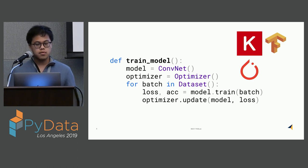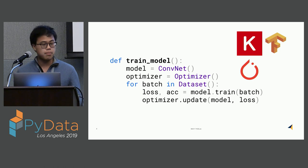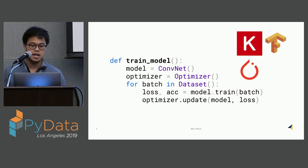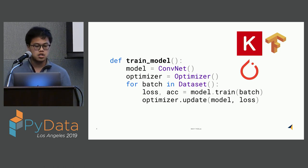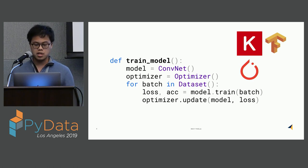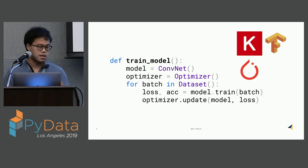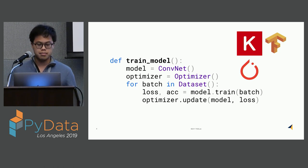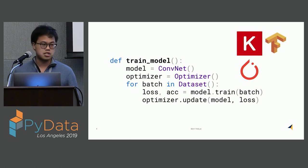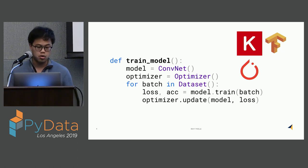Let's take a look at a function we have here. This is a typical program structure for a computer vision task. Within three lines of code, you can construct a model, create your optimizer, and iterate over your dataset using the optimizer to update your model.